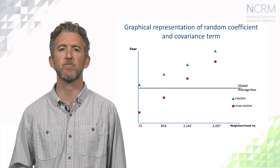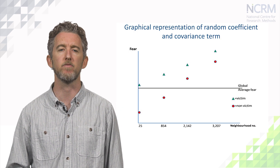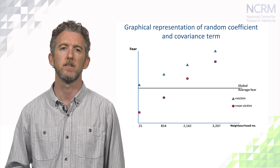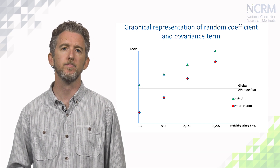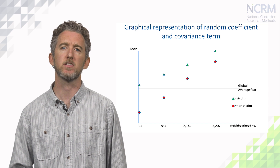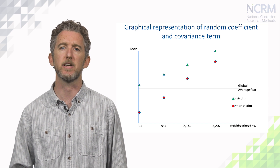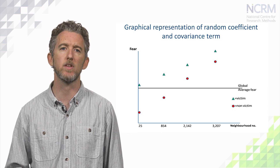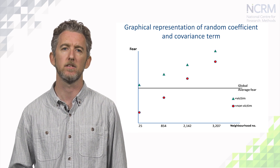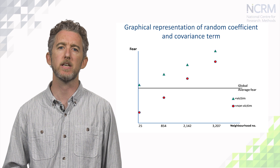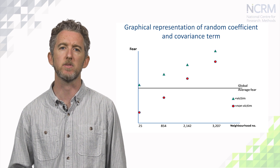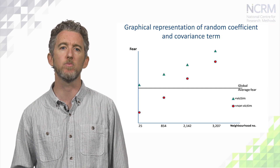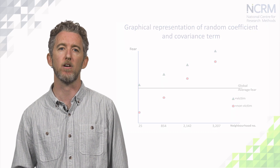We can represent this graphically by considering the differences between victims and non-victims for four sampled neighbourhoods. These areas have been ranked based on the levels of fear of non-victims — the red circles — from lowest on the left to highest on the right. Here we can see that in areas where non-victims tend to report more fear, towards the right of the graph, there is a smaller increase in fear amongst victims of crime.